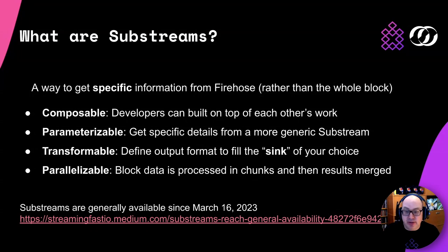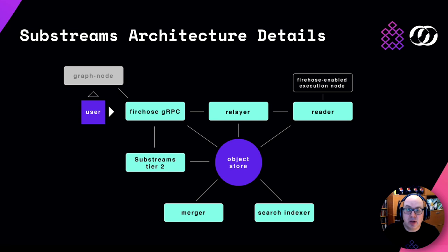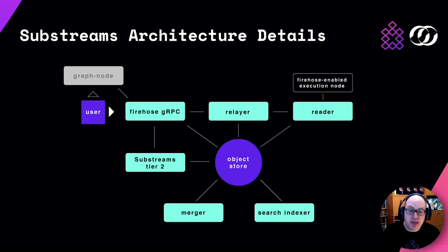Substreams have been generally available since March of this year and are ready to be used in all sorts of applications. Looking at the Substreams architecture, it's similar to Firehose with an extra Substreams Tier 2 box. The Substreams Tier 2 is what you run as a service provider — you run multiple Tier 2 instances to enable that parallel processing.